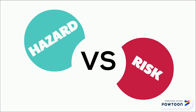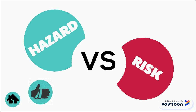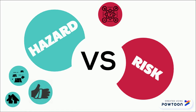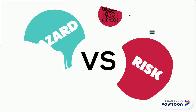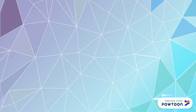Hazard potential for harm is defined in terms of human injury, damage to property, or damage to the environment. Meanwhile, risk means a combination of the likelihood of an occurrence of a hazardous event and the severity of injury.